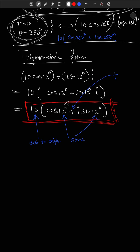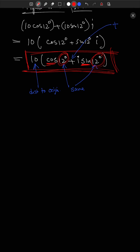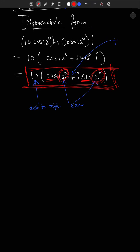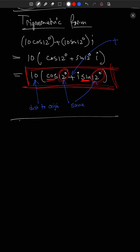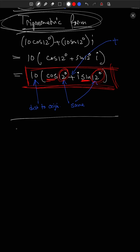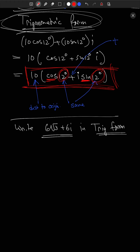So 10 cos(250°) + 10 sin(250°) · i would be written in trig form as 10(cos(250°) + i sin(250°)). The important feature is that we should be able to see the angle — I want to have the cosine and the sine there — because that allows me to read off r and θ.